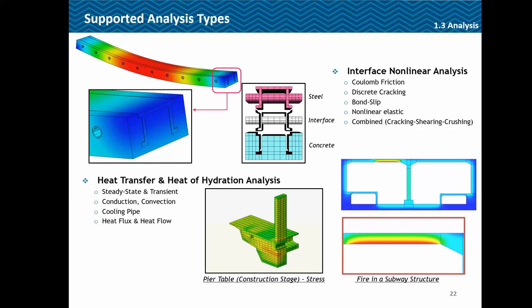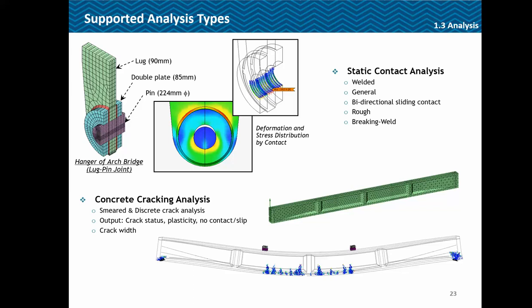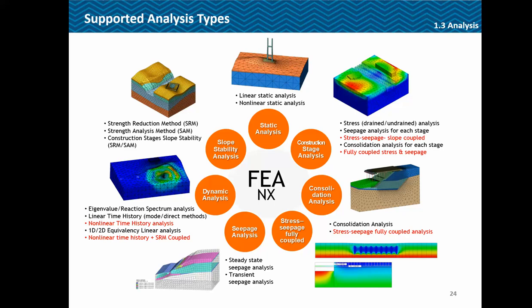It also supports interface nonlinear analysis where the interface can have different properties like coulomb friction, discrete cracking, pulse slip, and so on. Heat transfer and heat of hydration analysis can also be done. Contact analysis is available with various contact properties, and concrete cracking — smeared or discrete — gives output for crack status, plasticity, contact or slip, and crack width. Geotechnical analyses include slope stability, seepage, stress-seepage coupled analysis, consolidation, and construction stage analysis for soil.